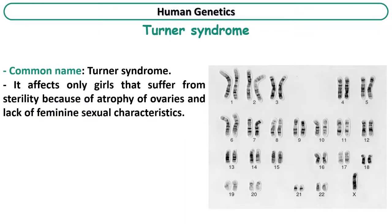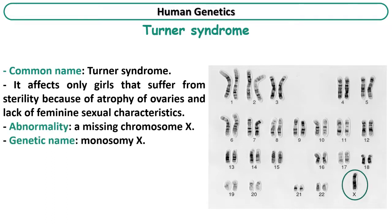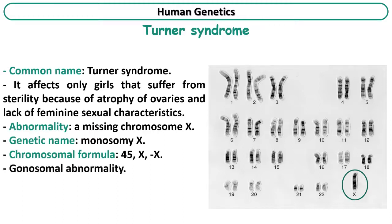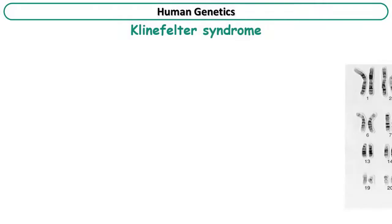What about Turner syndrome? This syndrome affects only girls who suffer from sterility because of atrophy of ovaries and lack of feminine sexual characteristics. The karyotype shows that there is only one chromosome X in this girl, which means the abnormality is a missing chromosome X. The genetic name of this syndrome is monosomy X, where the term monosomy refers to one chromosome. This is a gonosomal abnormality.